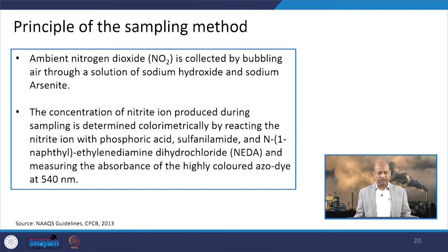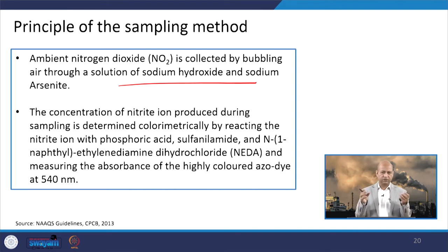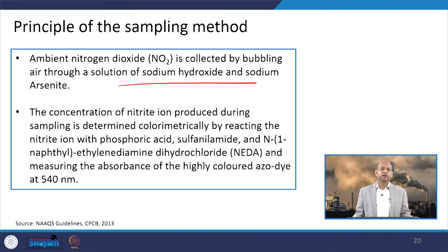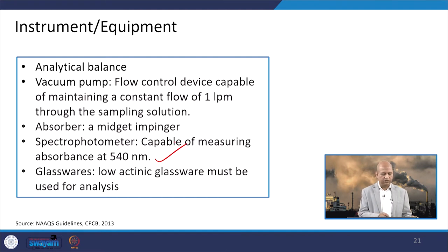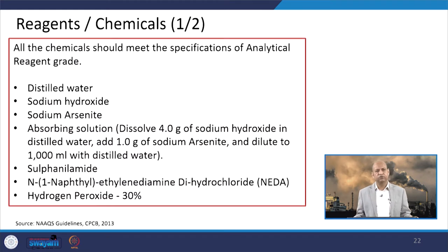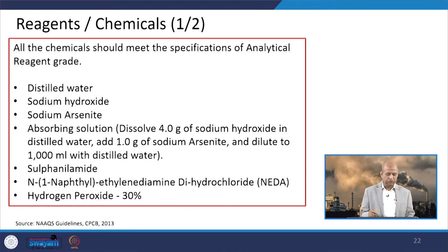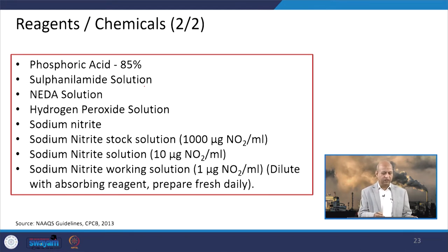The principle of the NO2 sampling method is that air is bubbled through a solution of sodium hydroxide and sodium arsenide, where the NO2 gets absorbed. The concentration of nitrite ion produced during sampling is determined by a colorimetric method, by reacting the nitrite ion with phosphoric acid and other listed chemicals. Instruments needed include an analytical balance, vacuum pump, impinger absorber, and a spectrophotometer capable of measuring absorbance at 540 nanometres. Glassware is also needed, along with reagents and chemicals: distilled water, sodium hydroxide, sodium arsenide, and other absorbing solutions.